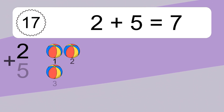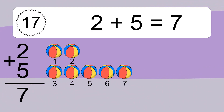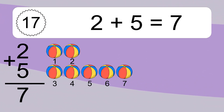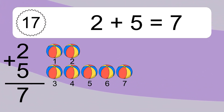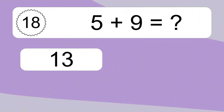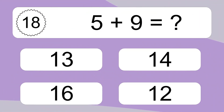2 plus 5 equals what? 2 plus 5 equals 7. Let's count it. 1, 2, 3, 4, 5, 6, 7.